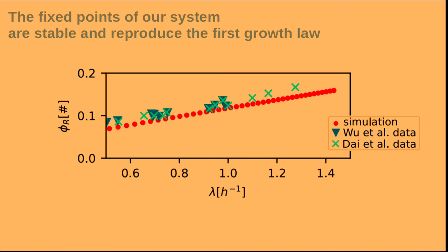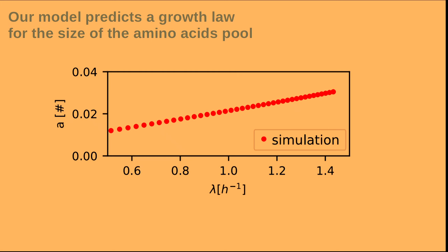Now I will show you the theoretical results we get with this model. Firstly, we wanted to make sure that our model predicted a stable fixed point, because otherwise any perturbation would drive the system off. We found that the fixed points of the model are stable. They also reproduce the first growth law, which is an important prediction because we did not use the first growth law as a definition for our model — so this is indeed a genuine prediction of the model. Another thing we can predict is the growth law for the size of the amino acid pool, which we explicitly describe in our model. The prediction is that also for the size of the amino acid pool we get a linear relation that is increasing in the growth rate.